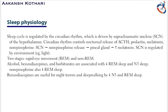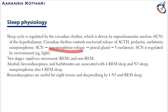The sleep cycle is regulated by circadian rhythm. Regulation of this is by the suprachiasmatic nucleus, which is present in the hypothalamus. The circadian rhythm controls the release of multiple hormones such as ACTH, prolactin, melatonin, and norepinephrine — different hormones released during the nocturnal phase when a person is sleeping.